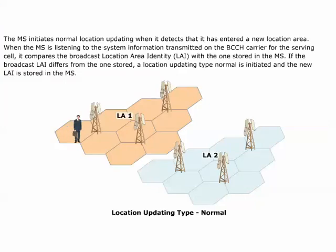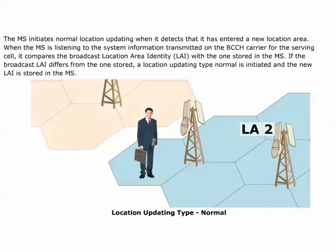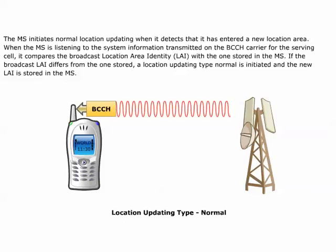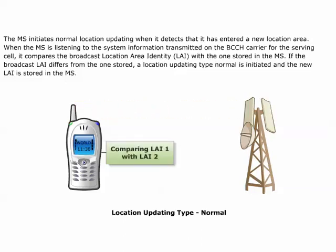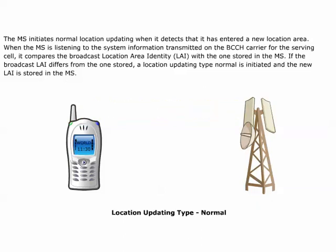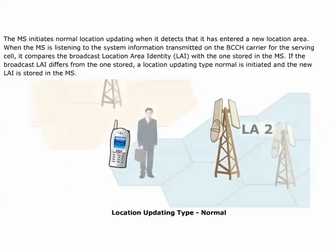The MS initiates normal location updating when it detects that it has entered a new location area. When the MS is listening to the system information transmitted on the BCCH carrier for the serving cell, it compares the broadcast location area identity, LAI, with the one stored in the MS. If the broadcast LAI differs from the one stored, a location updating of type normal is initiated and the new LAI is stored in the MS. If the location updating fails, for example due to entering a forbidden location area, the MS either tries to select another cell or return to the PLMN selection state.